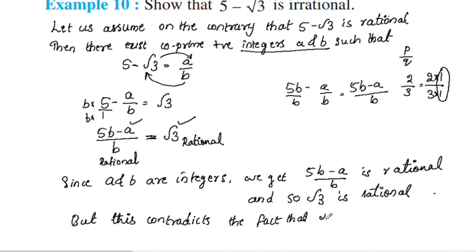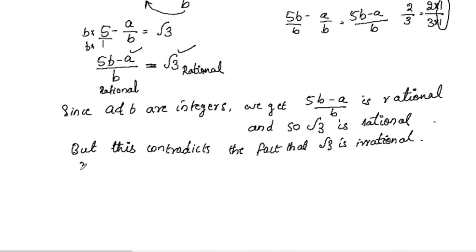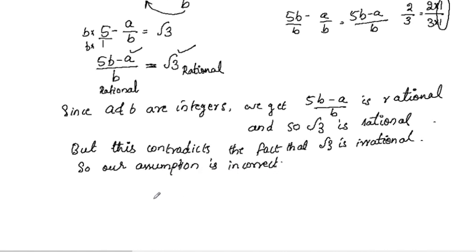This contradicts the well-known fact that root 3 is irrational. Therefore, our assumption is incorrect. Hence, 5 minus root 3 is an irrational number.